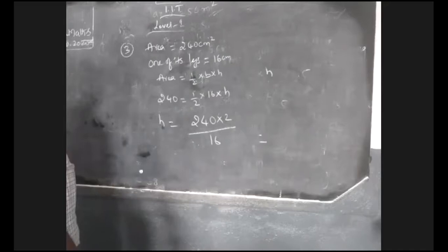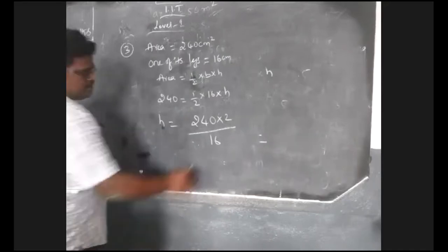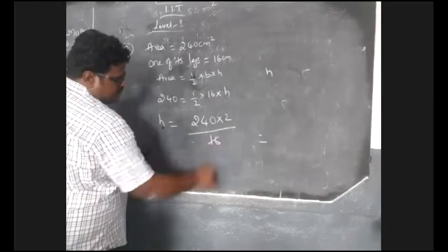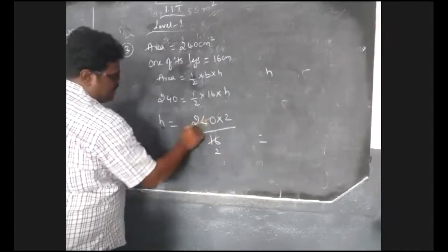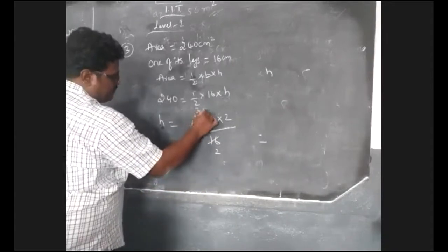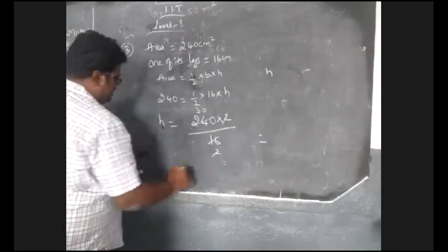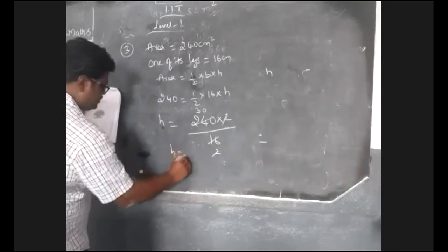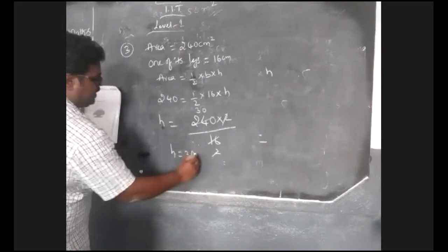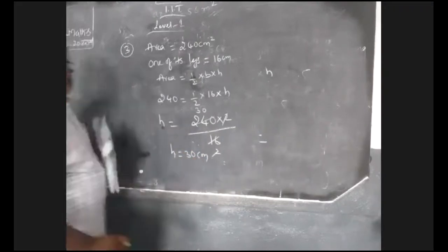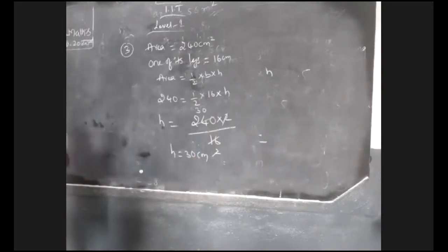H equals to 240 into 2 by 16. That 240 goes in the division table. 8 times 2, 8 times 3 is 24. The 2 goes cancelled. So H equals to 30 cm. H equal to 30 cm. Let's move to the answer.